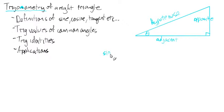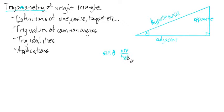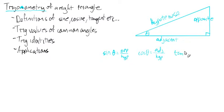We have this thing called the sine, spelled S-I-N-E, shortened to S-I-N. The sine of angle theta is the ratio of its opposite side to the hypotenuse. The cosine is the adjacent over the hypotenuse. And the tangent is the opposite over the adjacent.